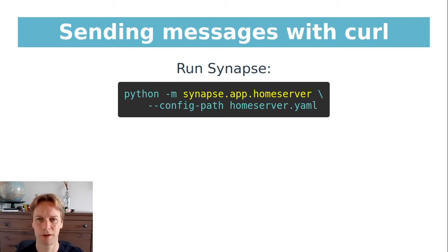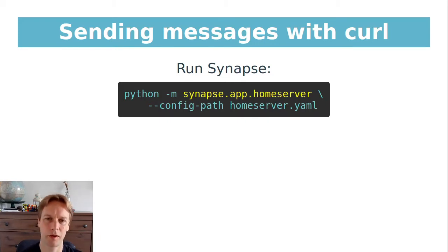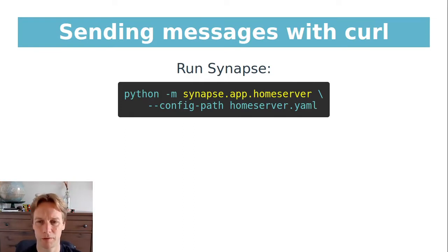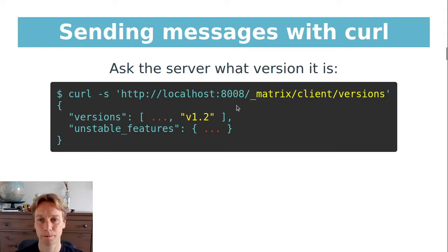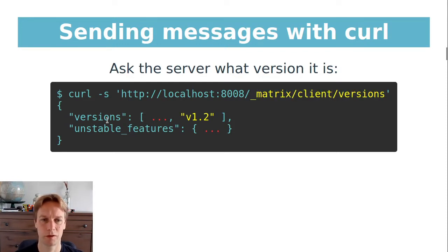Now let's get into the code and talk about how to send messages — what the actual JSON and HTTP looks like. First, we're going to run our own home server. Synapse is one of the most popular home servers; get its code from GitHub, put some stuff into homeserver.yaml, and run it — it's just a Python program. By default it comes up on port 8008. The first thing we want to do is ask the server what version of Matrix it supports, using a URL starting with '/_matrix/client'.